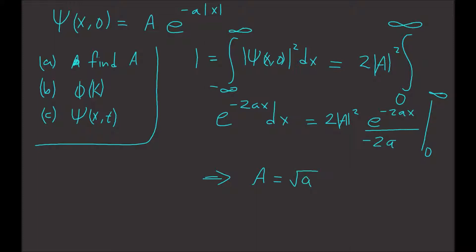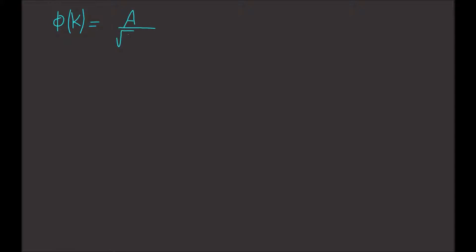So that's the first part. For the second part we have to find φ(k) given by equation number 6 in video number 16. This is equal to big A divided by the square root of 2π times the integral from negative infinity to infinity of e to the minus a absolute value of x times e to the minus ikx dx.